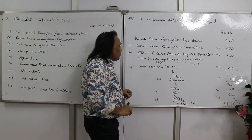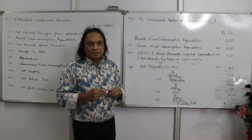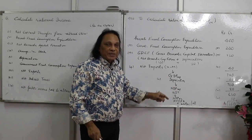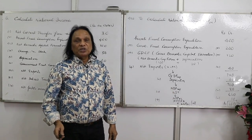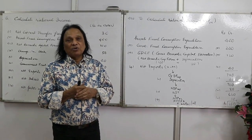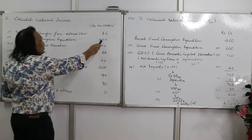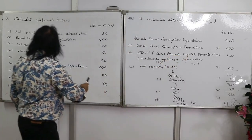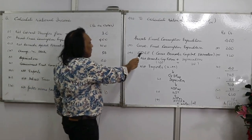Add net exports (X minus M, where X is exports and M is imports). Adding private final consumption expenditure plus government final consumption expenditure plus gross domestic capital formation plus net exports gives GDP at MP. From GDP at MP, subtract depreciation to get NDP at MP. Subtract NIT to get NDP at factor cost (domestic income). Add NFIA to get NNP at factor cost, which is national income.